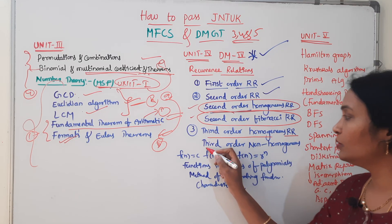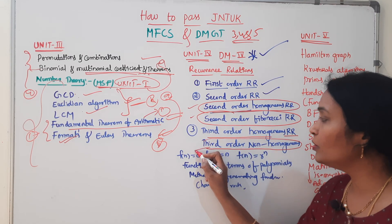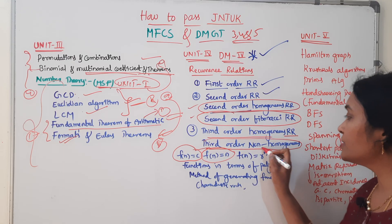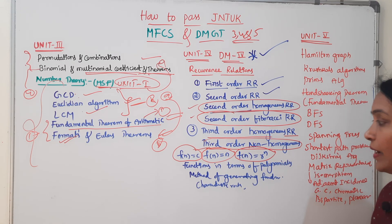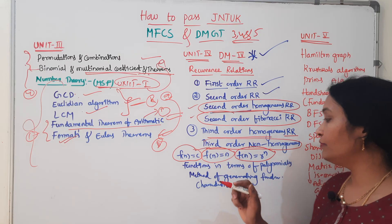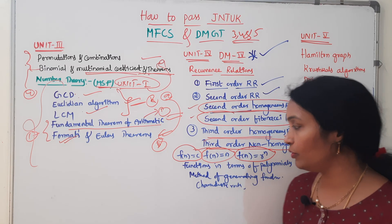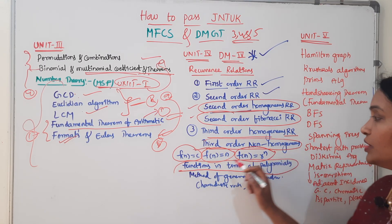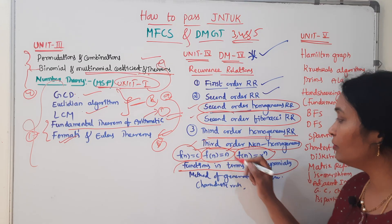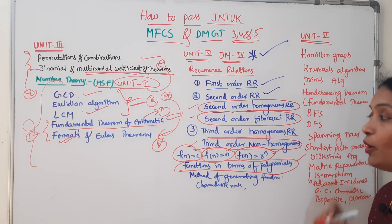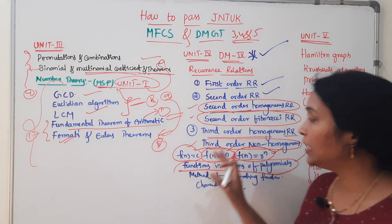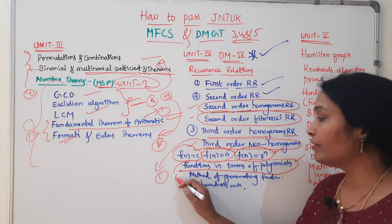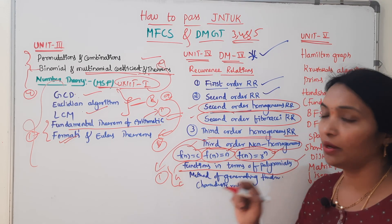Third order homogeneous, third order non-homogeneous — there are three types of non-homogeneous: F(n) equal to a constant, the function equal to n, and the function in terms of r to the power n. This is the method of generating functions and characteristic roots. Then function in terms of a polynomial. Third order non-homogeneous has four types: constant, n, r power n, and polynomial. For preparation, there is one specific question — no doubt. Generating function and characteristic roots — this is a compulsory question.